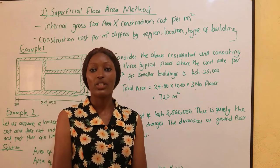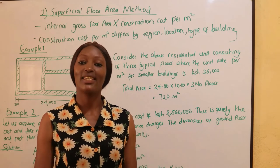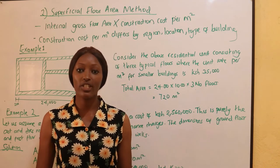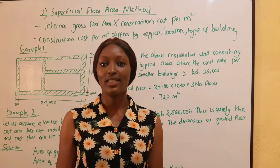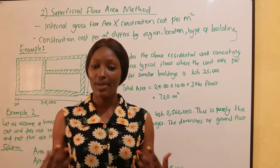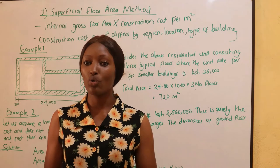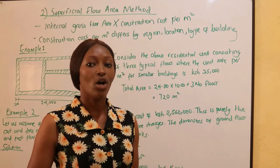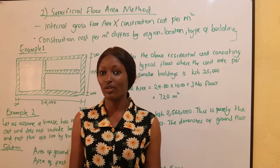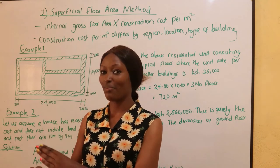We are going to discuss the Superficial Floor Area Method. This is a method where we use the unit per meter squared to calculate the cost of a building. For example, if you constructed a building of 5 meters by 5 meters measured internally at a cost of 1 million, and now you want to construct another building in the same location of the same nature measuring 20 meters by 20 meters, you can use the data from the previous building to determine the cost.